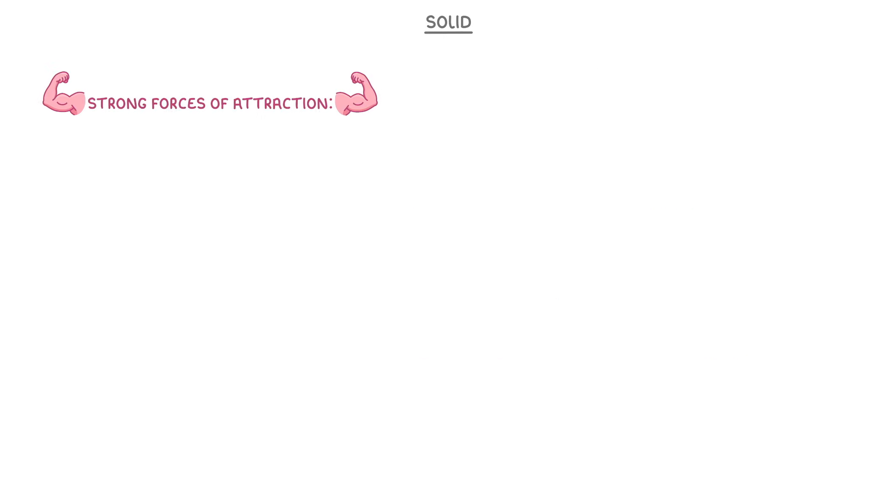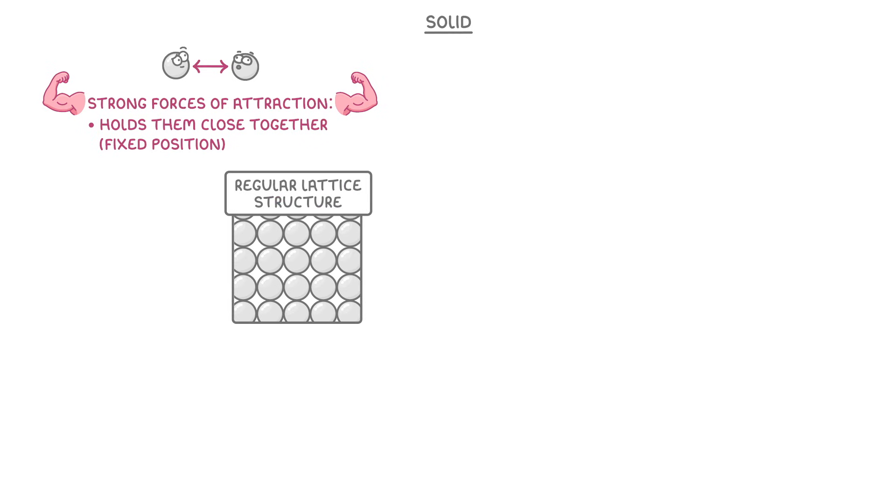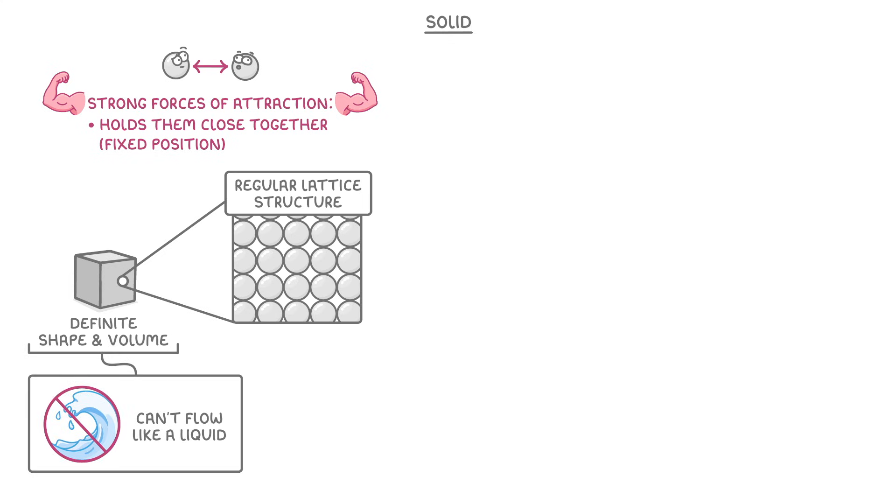In solids, there are strong forces of attraction between the particles which hold them all close together in a fixed position to form a regular lattice structure. Because the particles are fixed, the overall substance keeps a definite shape and volume, so it can't flow like a liquid.